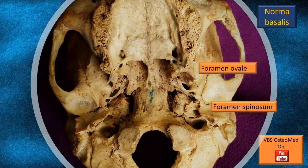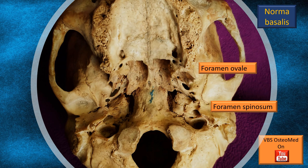We identified the foramen lacerum earlier. Anterior and lateral to it, there are two other foramina shown by flashing arrows. The anterior one is the foramen ovale, and the one immediately lateral or behind it is the foramen spinosum. These foramina are portals through which the neck region or the basal part of the head communicates with intracranial structures — blood vessels and nerves traverse these gaps. We are identifying the foramen ovale and foramen spinosum, both parts of the sphenoid bone.